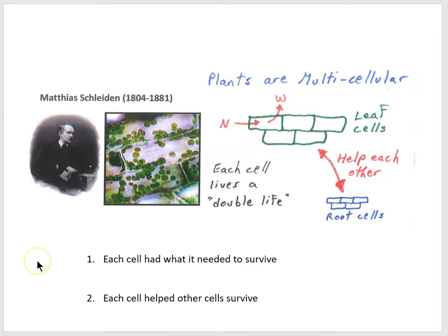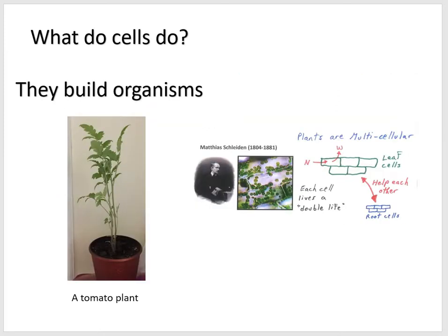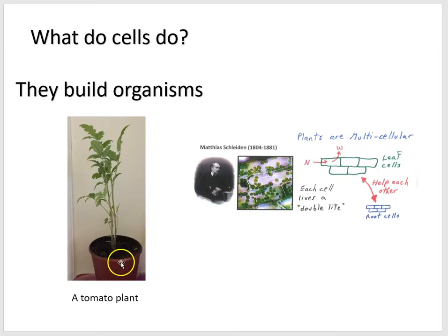So Schleiden and others helped us understand that plants are multicellular organisms. At this stage then, what do cells do? They build an organism. Here is a tomato plant — it's composed of root cells, stem cells, and leaf cells, and they're all cooperating.